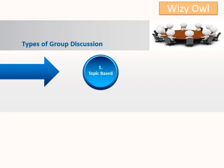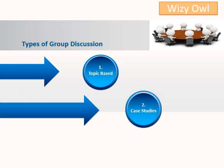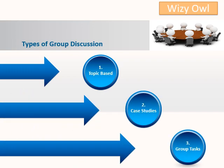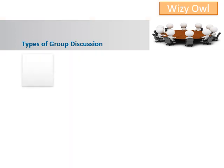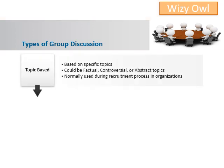Let's have a look at the types of group discussions. The first type is topic-based. Group discussions can be based on case studies or group tasks. Topic-based group discussions are based on factual, controversial, or abstract topics. Normally, they are used in the recruitment process of organizations.